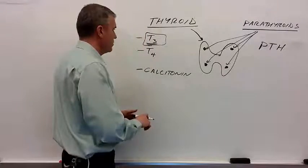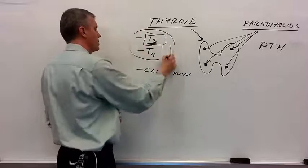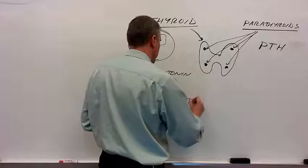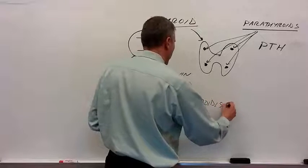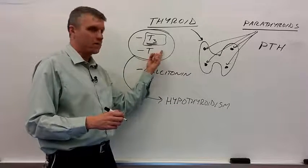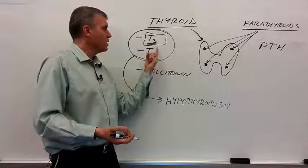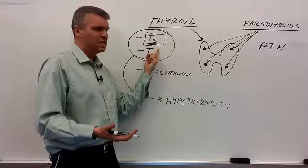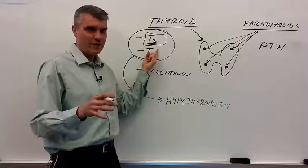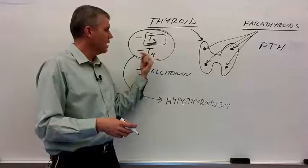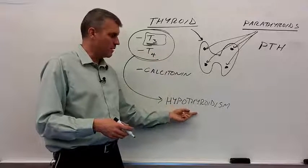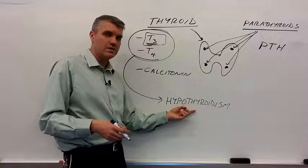Alright, let's talk about some disorders. For T3 and T4, the thyroid hormones, there are two major disorders. One is hypothyroidism. Hypothyroidism is a decrease in the expression or release of T3 and T4. T3 and T4 are protein-based hormones, although they're hydrophobic. They're made from tyrosine, which is a hydrophobic amino acid, so they have that hydrophobic mechanism of action.